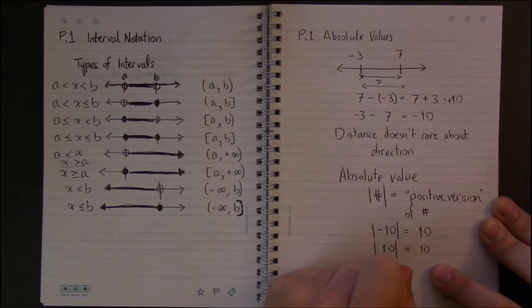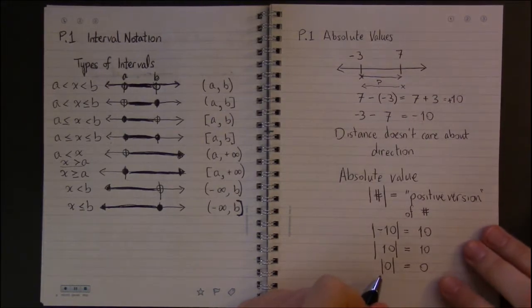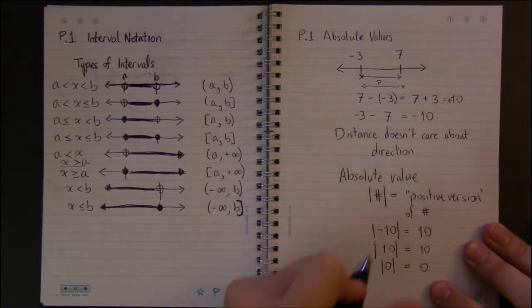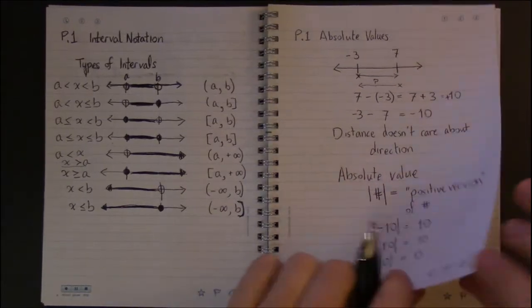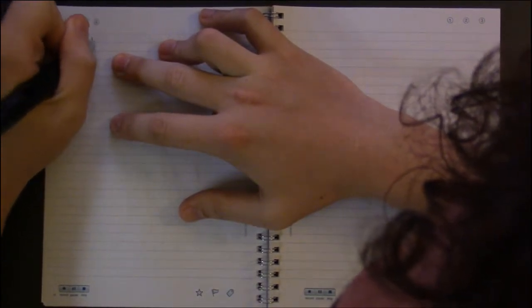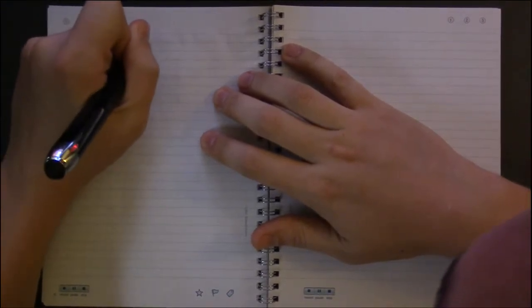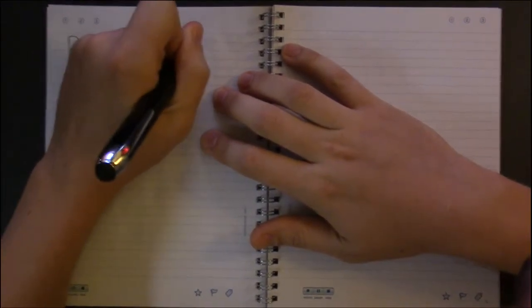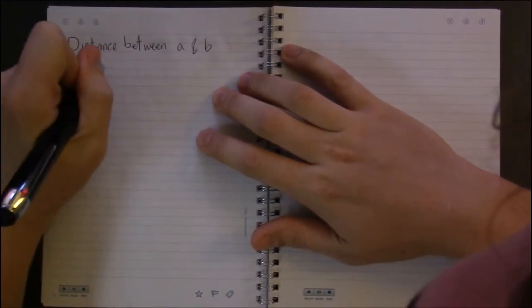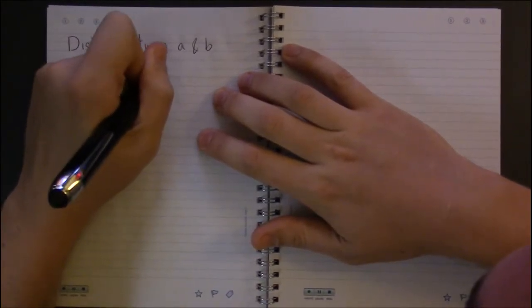And the other thing that doesn't change when you take absolute values of it is zero. The positive version of zero is just zero. So the distance between two points on the number line - the distance between a and b on the number line - is just the absolute value of b minus a.